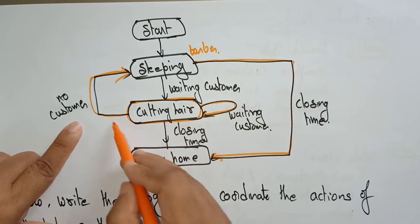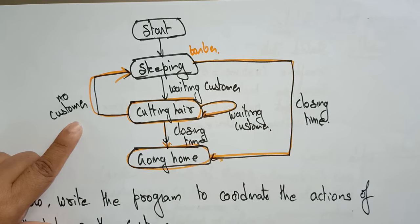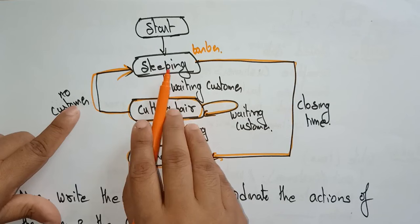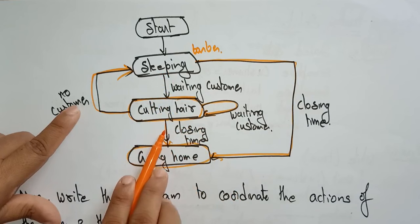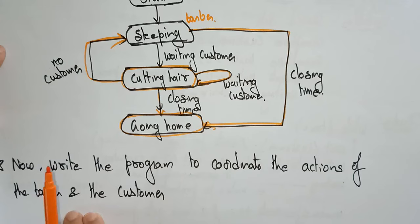After cutting hair, if it is closing time, the barber goes home — whether he was sleeping or not. These conditions govern how the process executes. The barber goes home at closing time regardless of whether customers are present. The program coordinates the actions of the barber and the customer based on these conditions.